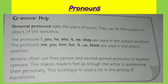There are different types of pronouns. The first one is personal pronoun. Personal pronouns are those pronouns that take the place of a noun. They can be the subject or the object of the sentence. The pronouns I, you, he, she, it, we, they are used in the subject position. The pronouns me, you, him, her, it, and them are used in the object position. Writers often use first person and second person pronouns to express opinion. This makes readers feel as though the writer is addressing them personally. This technique is used a lot in the writing of expositions.